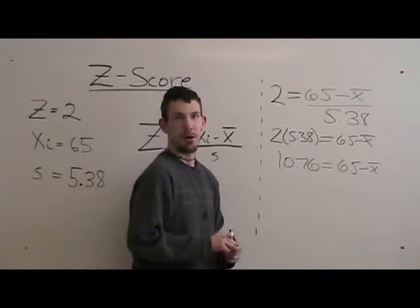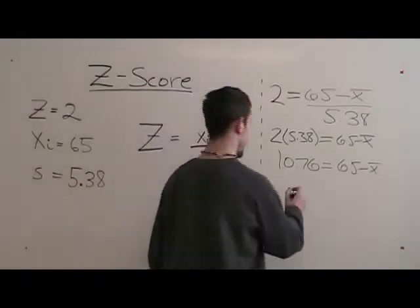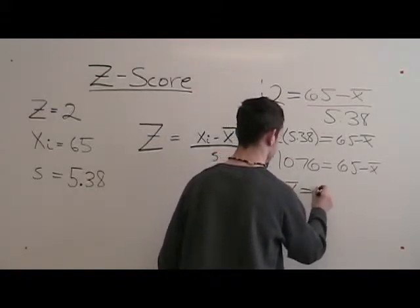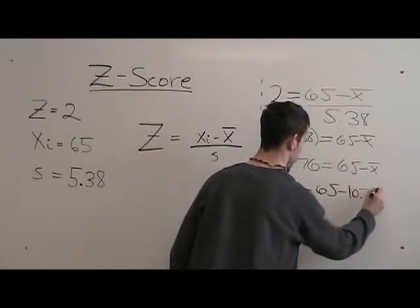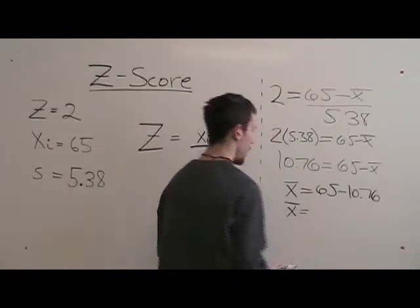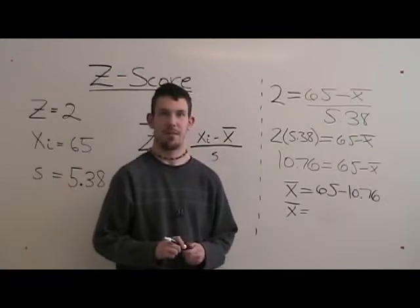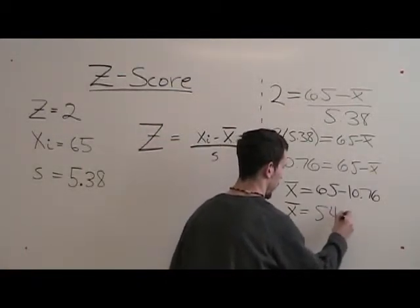Isolate the x-bar by bringing it over to the other side of the equal. 65 minus 10.76 equals 54.24.